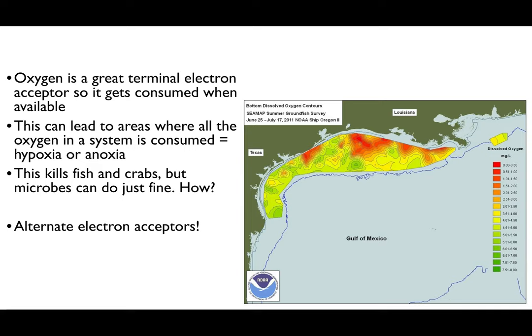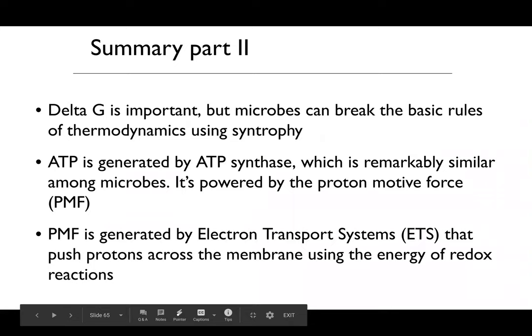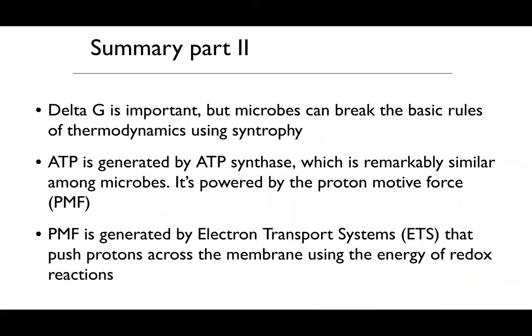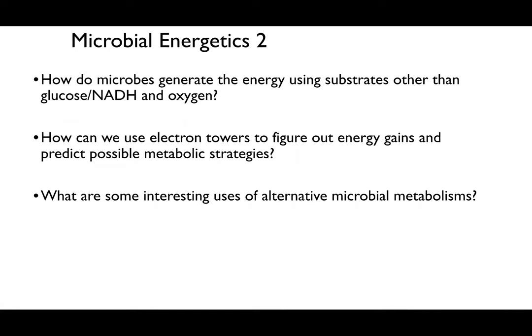That switch to alternative electron acceptors will be the topic for part two of this energetics section. But first, let's summarize part two: delta G is an important process, but microbes can break the basic rules of thermodynamics using syntropy—as in the consumption of benzene between two microbes to break down oil. ATP is generated by ATP synthase, remarkably similar among microbes, all powered by proton motive force. That proton motive force is generated by the electron transport system, pushing protons across the membrane using energy from redox reactions.